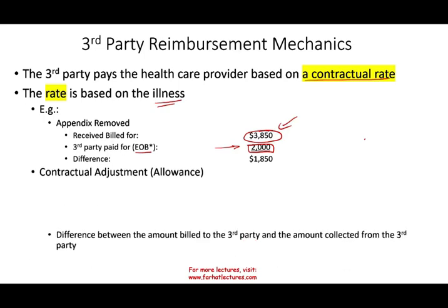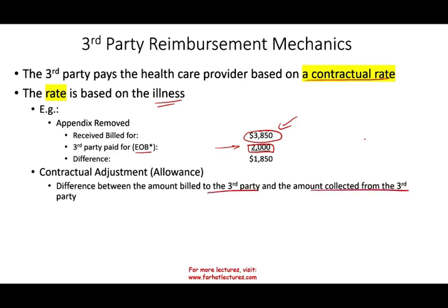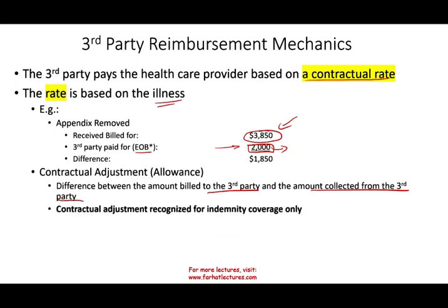The contractual adjustment is the difference between the amount billed to a third party and the amount collected from that third party. Although they billed $3,850, they accepted $2,000. Without insurance, they'd bill the full $3,850 — the insurance company gets a volume discount that an individual patient doesn't. Contractual adjustment is recognized for indemnity coverage only. With your health insurance, some coverage may be indemnity, some capitation, and some services may be limited.